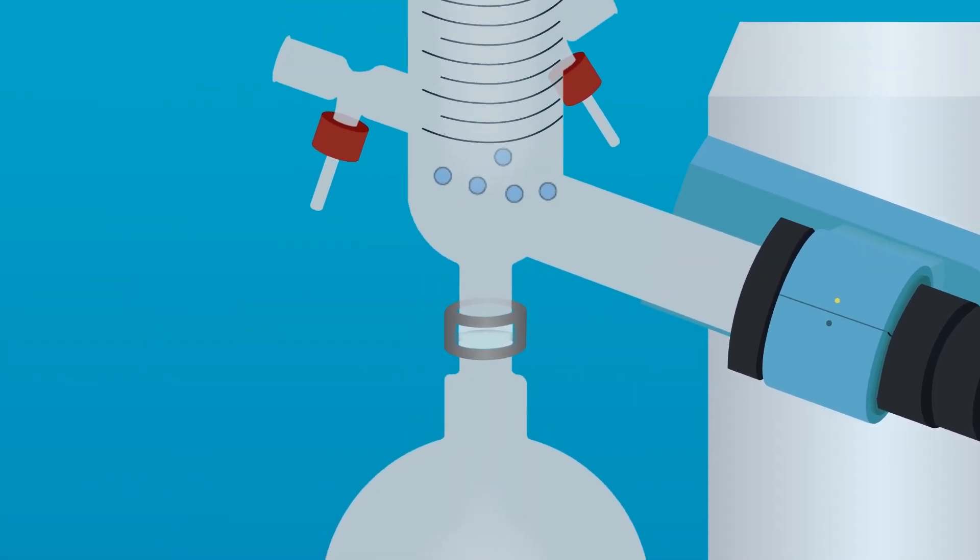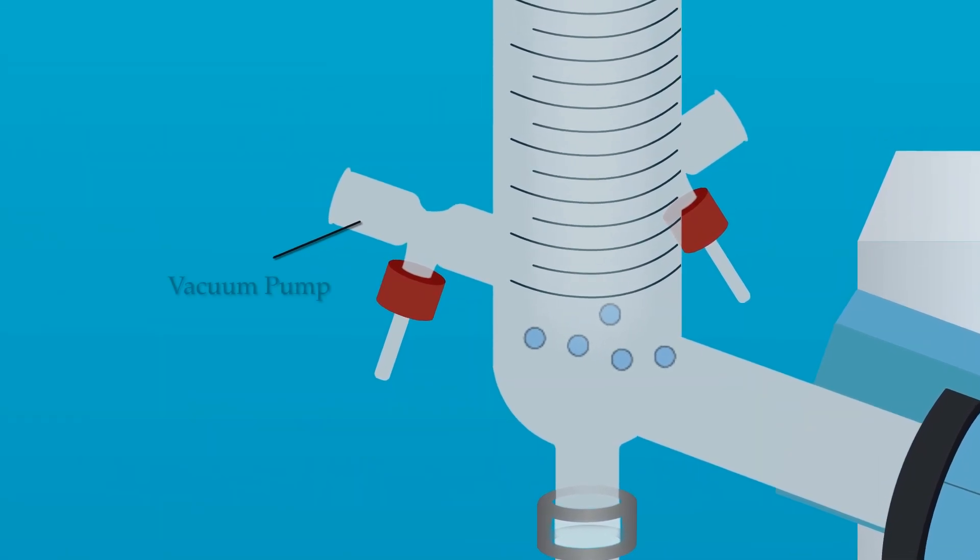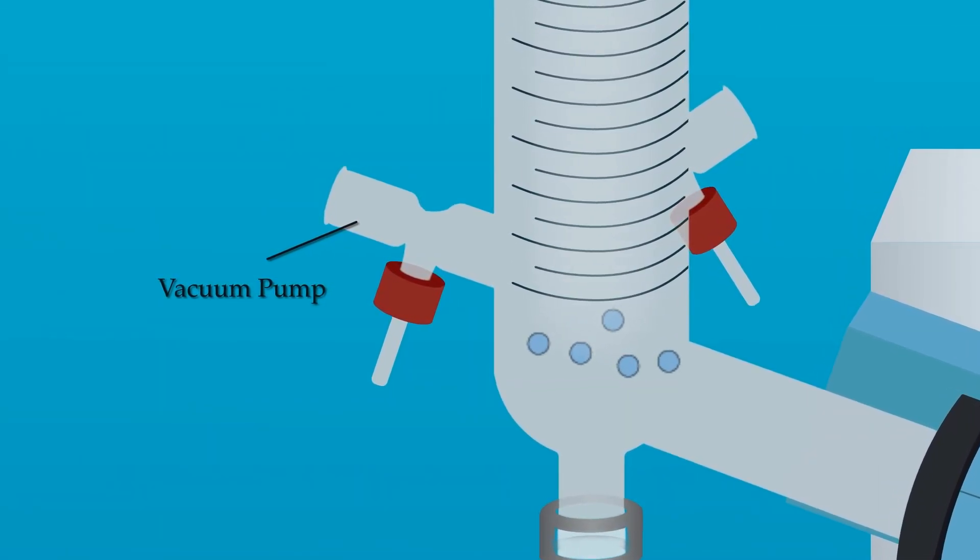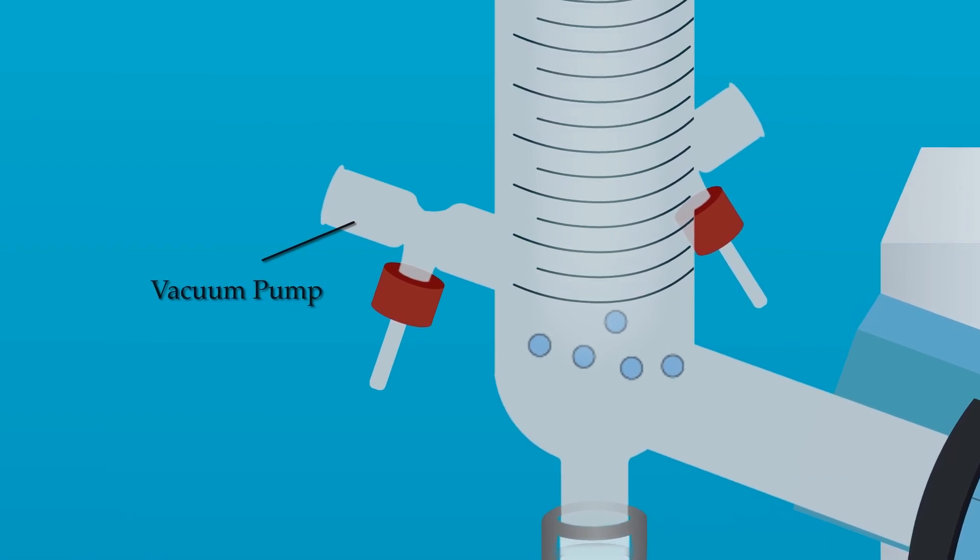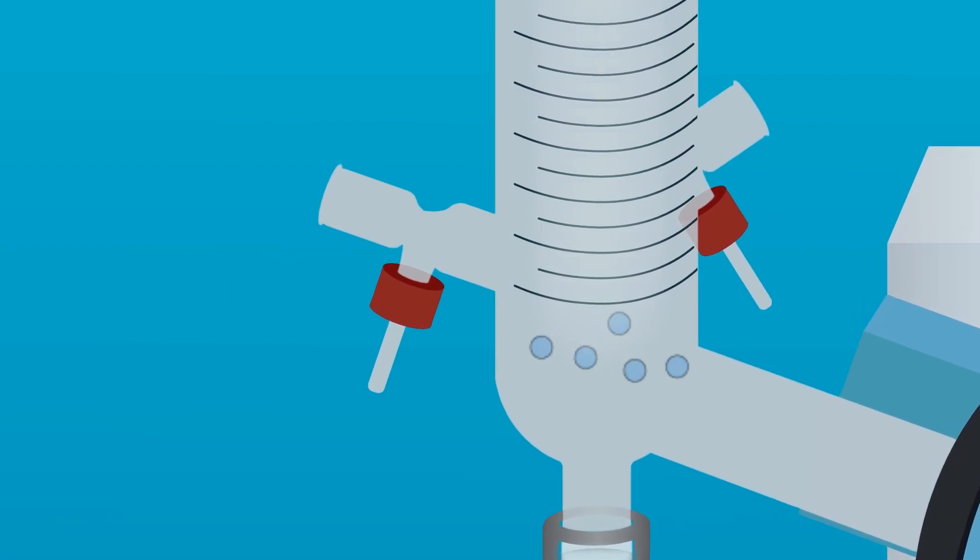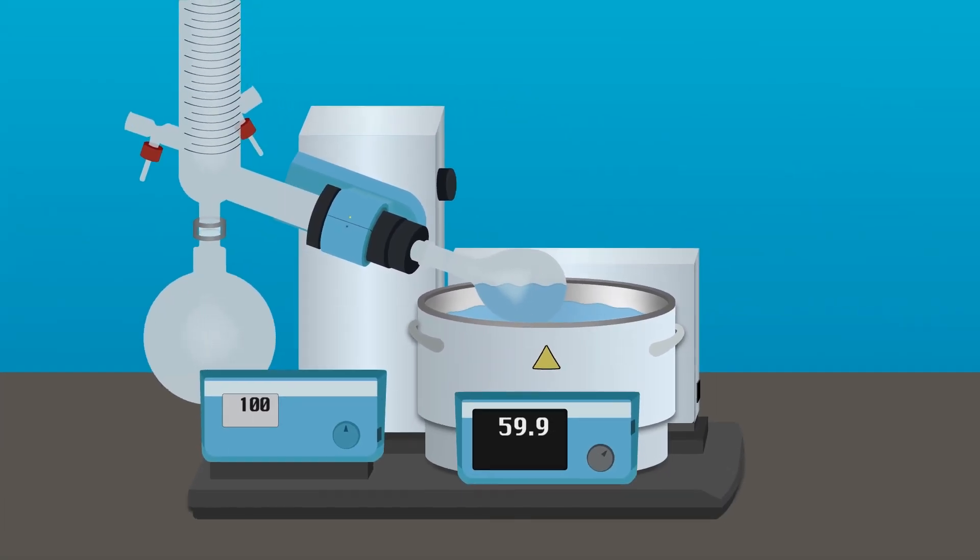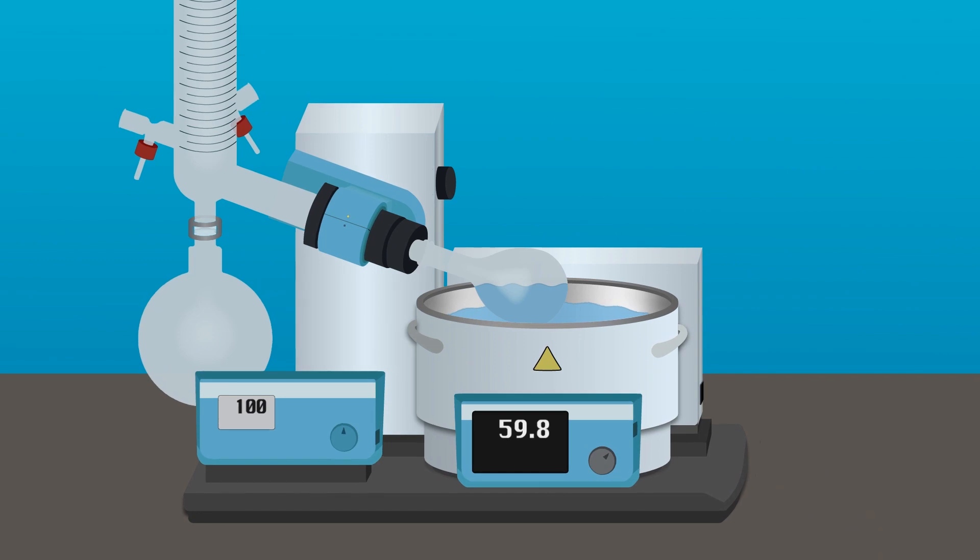Some rotary evaporators also include a vacuum pump which can be connected to the condenser. This vacuum pump is meant to decrease the pressure inside the rotating flask, causing the solvent to evaporate at a lower than normal temperature. The combination of heat, rotation, and decreased pressure creates an ideal environment for efficient evaporation.